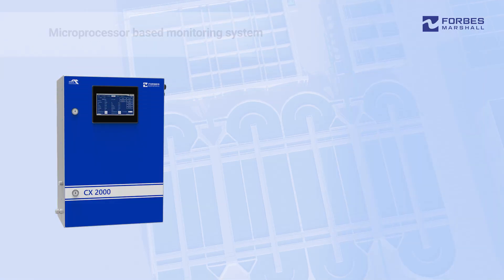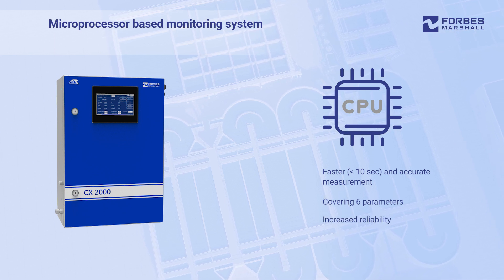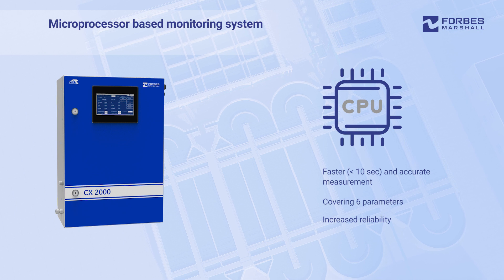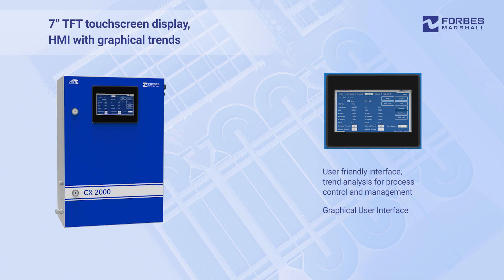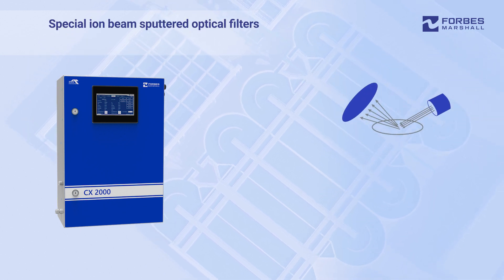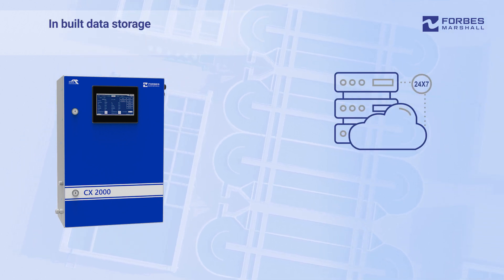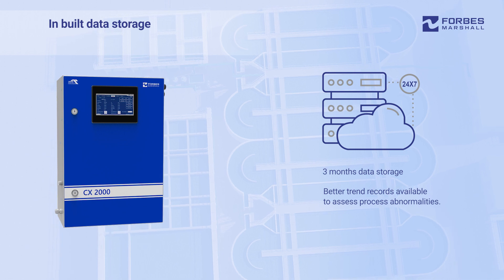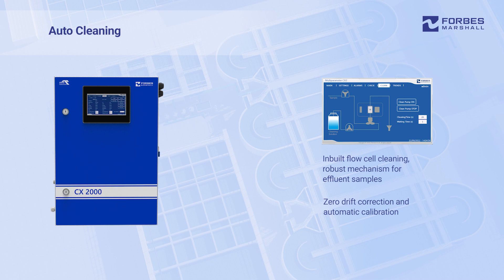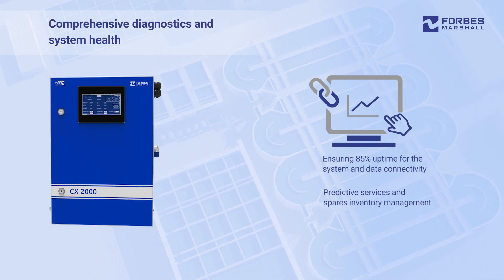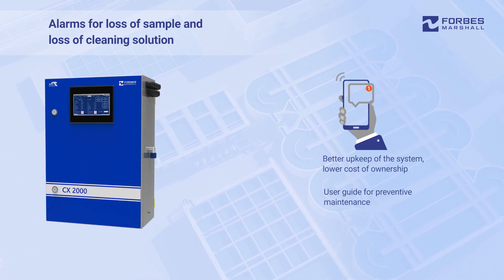The CX2000 comes equipped with a state-of-the-art advanced ARM Cortex M4 core 168 MHz CPU, a 7-inch TFT touchscreen display, HMI with graphical trends, special iron-beam sputtered optical filters, in-built data storage, auto-cleaning and auto-zero calibration system, comprehensive diagnostics and system health, and alarms for loss of sample and loss of cleaning solution.